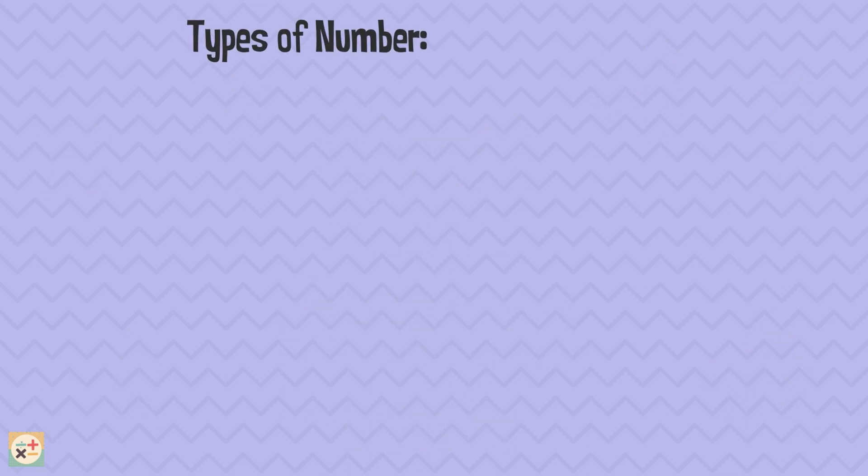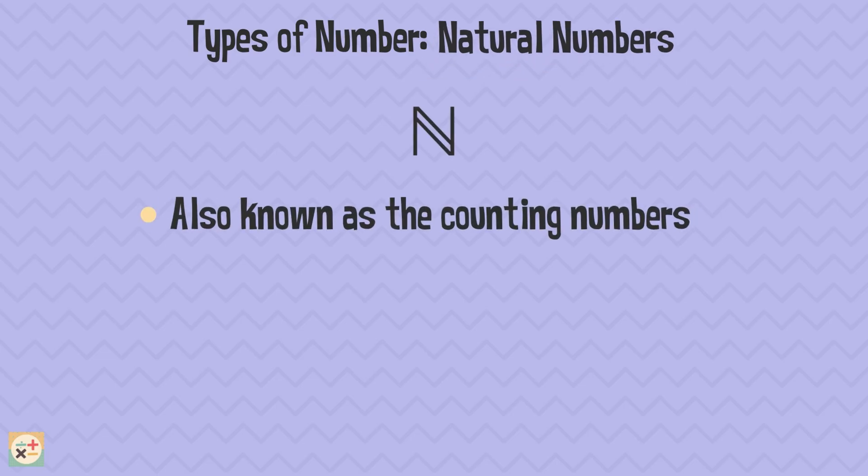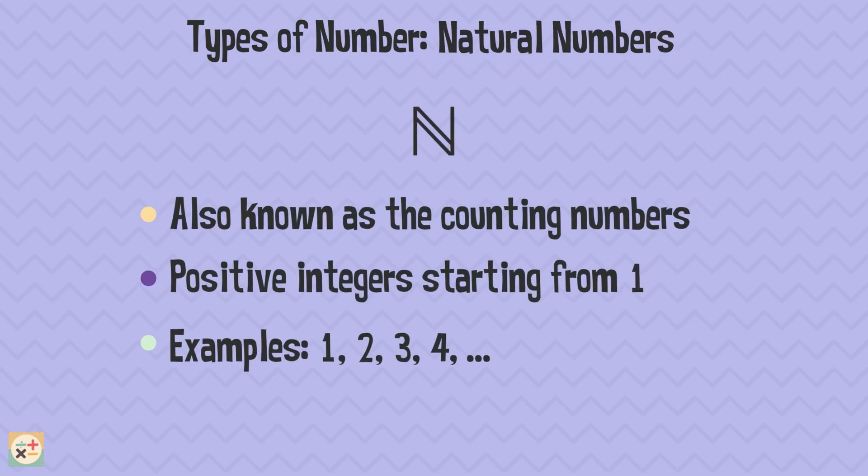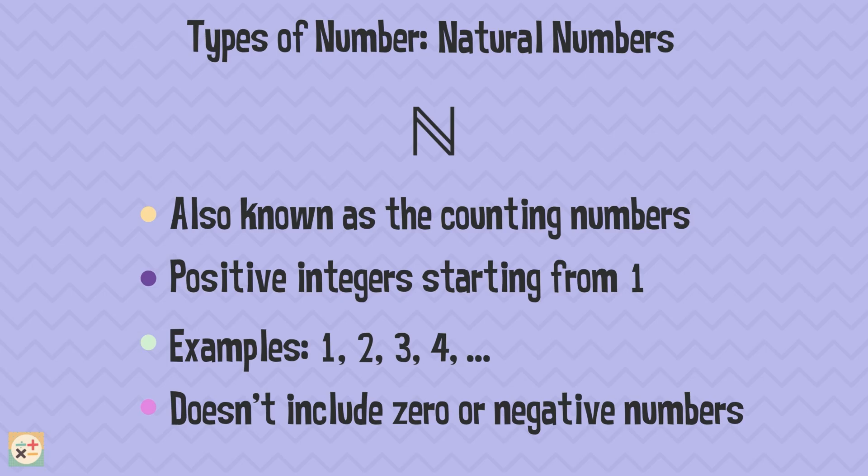First up, we have natural numbers. These are the numbers we all start learning when we first learn to count. They include numbers like 1, 2, 3, and so on. Natural numbers are sometimes called counting numbers because we use them to count objects. So if you're counting sweets in a jar, you're using natural numbers. Natural numbers do not include zero or negative numbers.